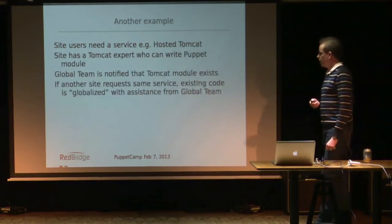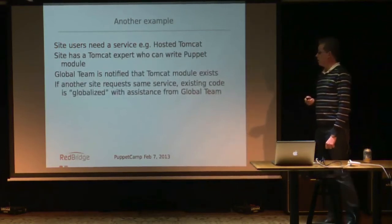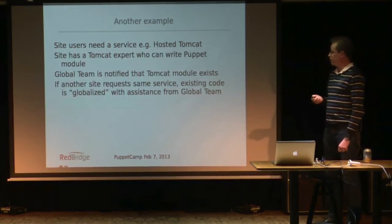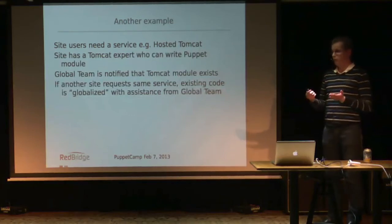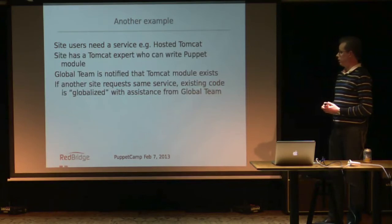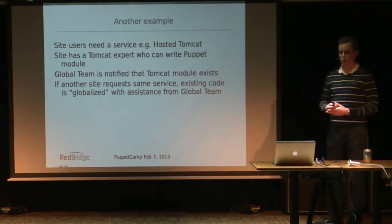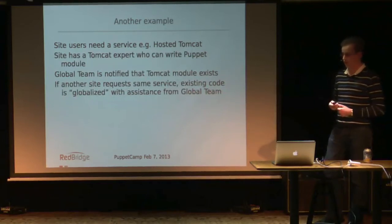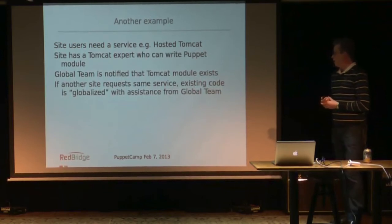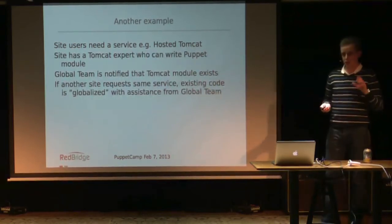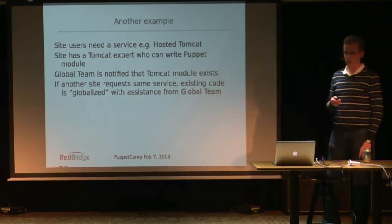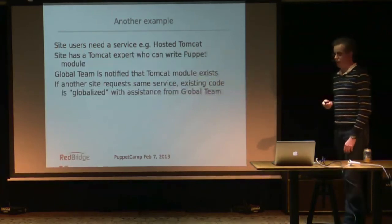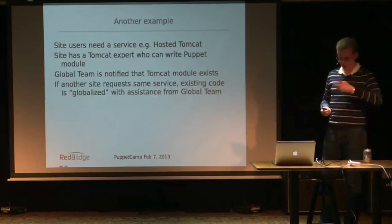Here's another example. Site users need some kind of service, but this time they have an expert locally on the site, so we leverage him. He just writes a Puppet module and says 'by the way guys, I wrote the Puppet module for this — if you need it, here it is.' The global team takes this knowledge and keeps it. Next time someone asks for a hosted Tomcat Puppet module, we take up this code, make sure it's still okay, and give it to them.